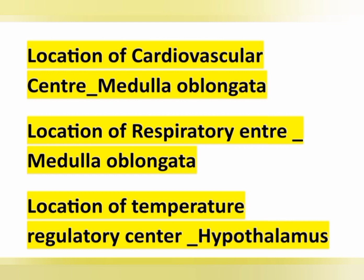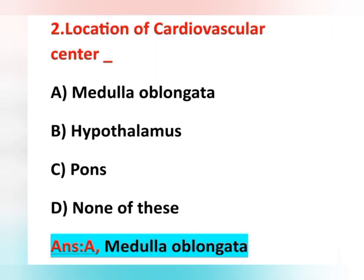The temperature regulatory center is located in the hypothalamus. These are important points: cardiovascular center and respiratory center are in the medulla oblongata; temperature regulatory center is in the hypothalamus. Our answer: location of cardiovascular center is option A, medulla oblongata.